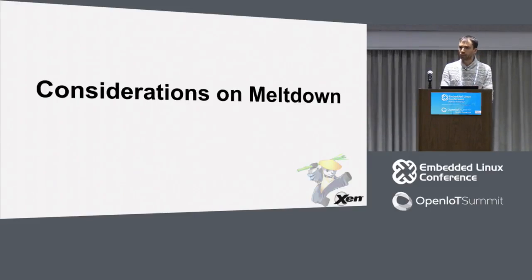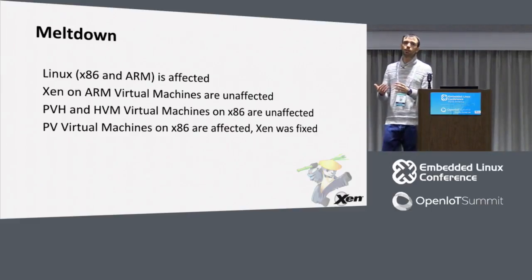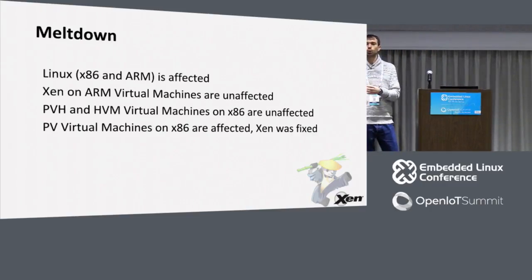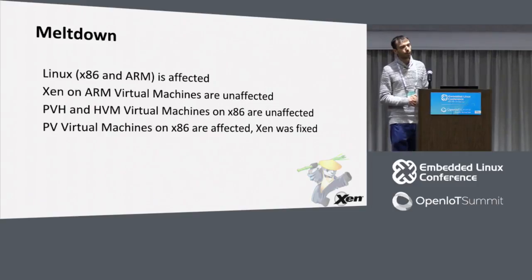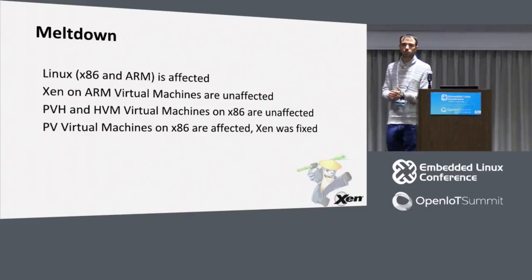Meltdown is the worst of the vulnerabilities disclosed at the beginning of the year. With meltdown, an application can use this vulnerability to attack Linux. Also, a kernel or an application inside a VM can use meltdown to attack the hypervisor. However, kernels and hypervisors have been differently affected. Linux has been affected on x86 and ARM and has been fixed. Most hypervisors actually have not been affected because meltdown requires a shared address space — on most hypervisors, nested paging is used. Specifically, Xen on ARM has not been affected. Xen on x86 PVH and HVM have not been affected; PV is the only mode that was affected.